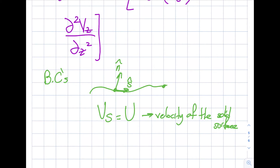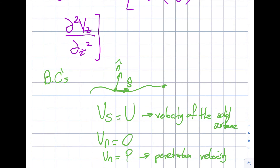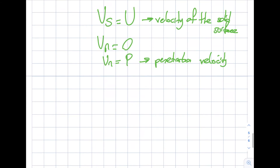However, in some cases like air filters in an air conditioning system, air does pass through the surface, so vn can be a penetration velocity. This is a common boundary condition — I'll almost always have a solid that the fluid is touching, so I need to take advantage of this.